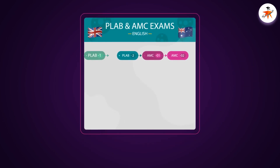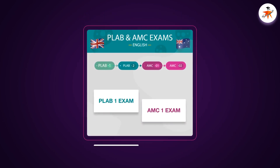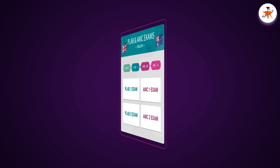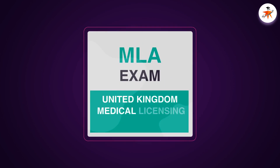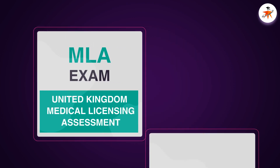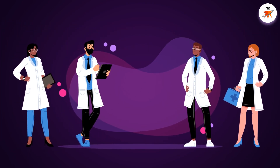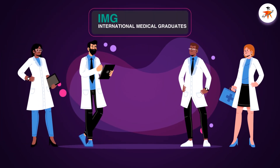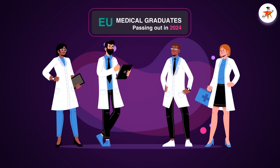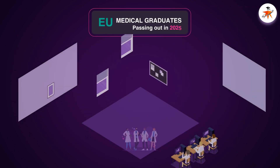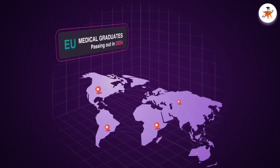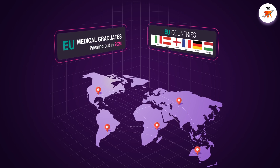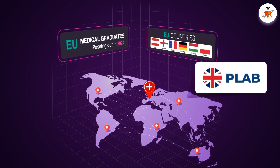Generally, PLAB and AMC exams are conducted in English and consist of two parts each. PLAB has been recently transitioned into UK MLA or MLA exam, which is United Kingdom Medical Licensing Assessment, making it a more standardised medical licensing exam, quite similar to USMLE steps. Now all medical graduates, let it be IMGs or UK or EU graduates passing out in 2024 or onward, are required to sit for this new exam, unlike the PLAB system where local graduates or medical graduates coming from EU countries or Switzerland were exempted.